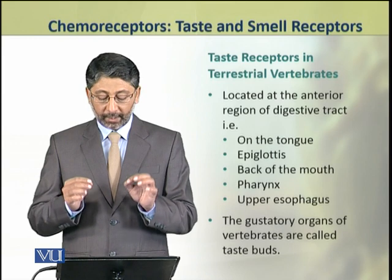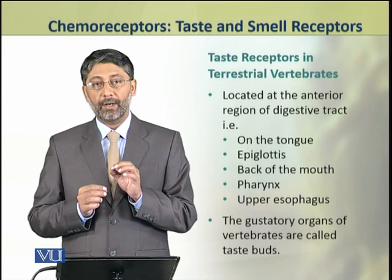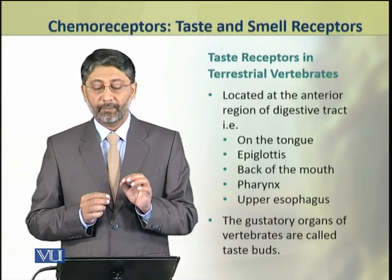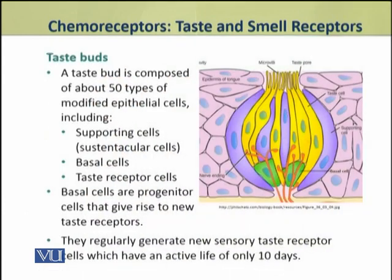These gustatory organs of vertebrates are called taste buds. A taste bud is composed of about 50 types of modified epithelial cells. The most important of these epithelial cells are the supporting cells called sustentacular cells, basal cells, and taste receptor cells.